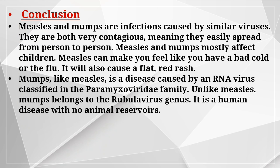Measles and mumps are infections caused by similar viruses and are both very contagious, meaning they easily spread from person to person. Measles and mumps mostly affect children. Measles can make you feel like you have a bad cold or flu and will also cause a flat red rash. Mumps, like measles, is a disease caused by an RNA virus classified in the Paramyxovirus family. Unlike measles, mumps belongs to the Rubulavirus genus and is a human disease with no animal reservoirs.